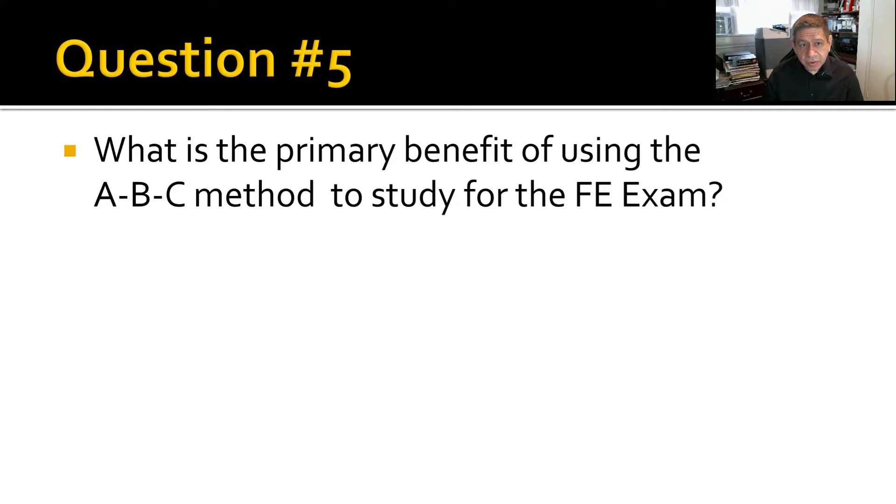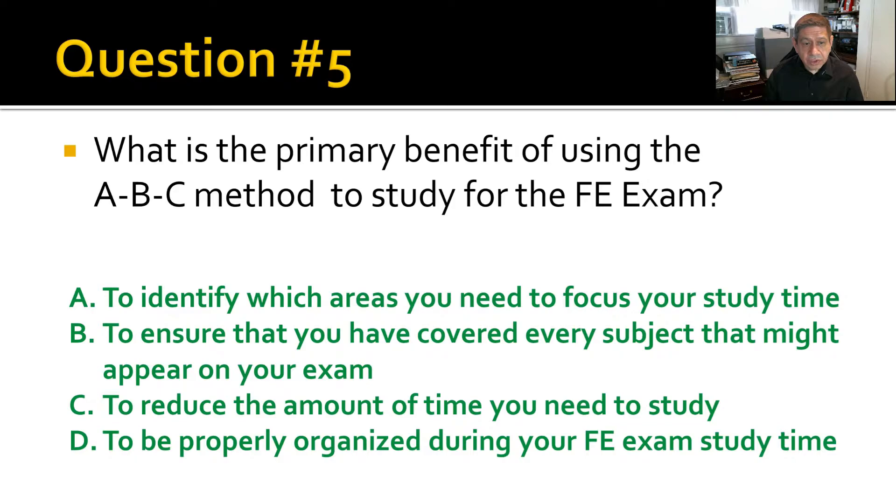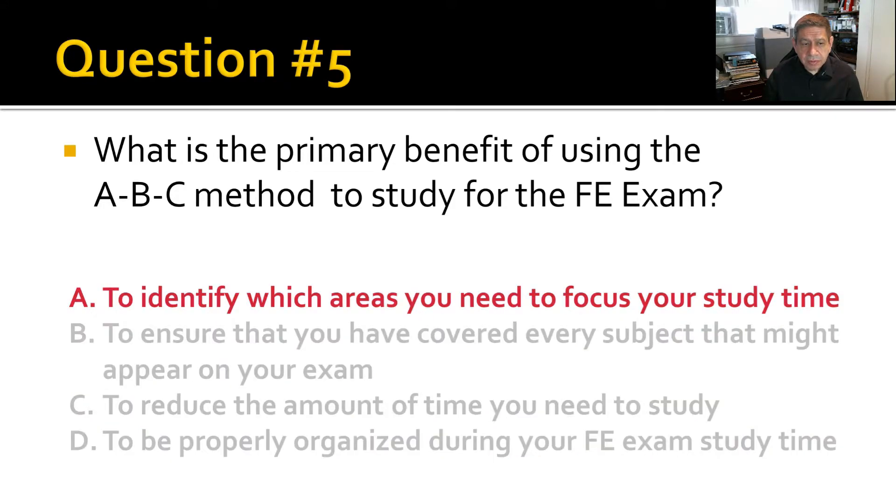Question number five. What is the primary benefit of using the ABC method to study for the FE exam? To identify which areas you need to focus your study time on? To ensure that you have covered every subject that might appear on your exam? To reduce the amount of time you need to study? To be properly organized during your FE exam study time? This one gets a little bit gray. But the correct answer is A. To identify which areas you need to focus your study time on. It does help with all the other choices here. But that is not the primary benefit. It's to decide where to focus.